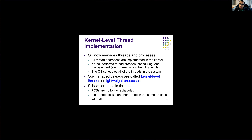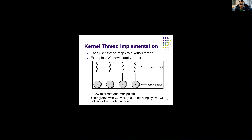In kernel-level threading, each user-space thread maps to a kernel thread in a one-to-one mapping. Because the kernel is aware of all threads, it can schedule between different user threads. If one user thread is blocked, it does not block all the other user threads. This also integrates very well with the operating system — when one thread dies, it doesn't affect all the other threads.